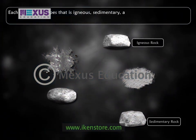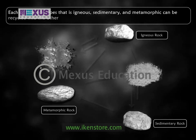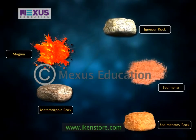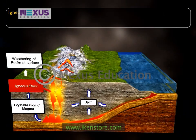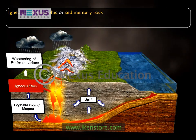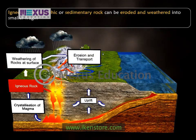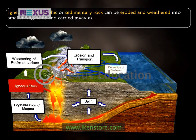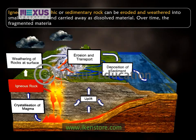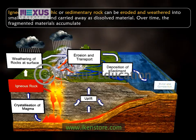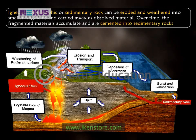Each of the rock types — igneous, sedimentary and metamorphic — can be recycled into the other. These dynamic transitions occur through geologic time. Igneous, metamorphic or sedimentary rock can be eroded and weathered down into smaller fragments and carried away as dissolved material. Over time, the fragmented materials accumulate, get buried by additional materials and are cemented into sedimentary rocks.